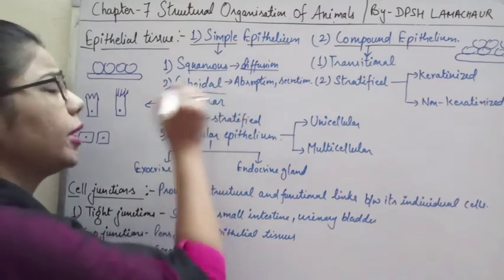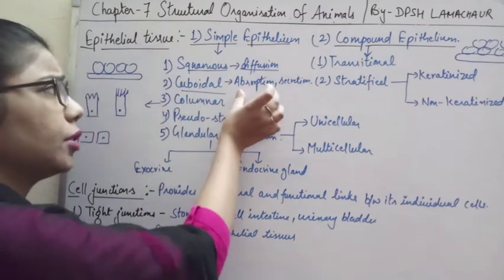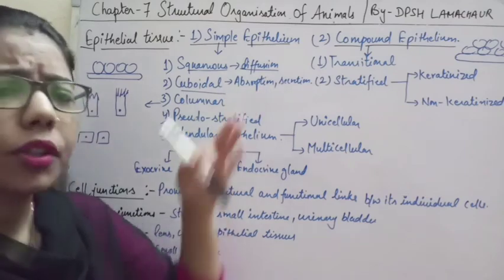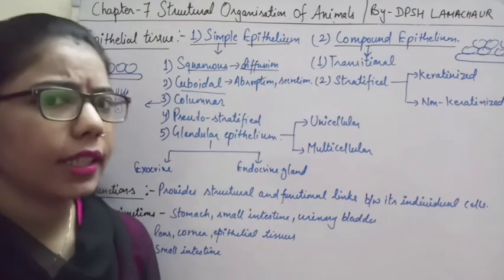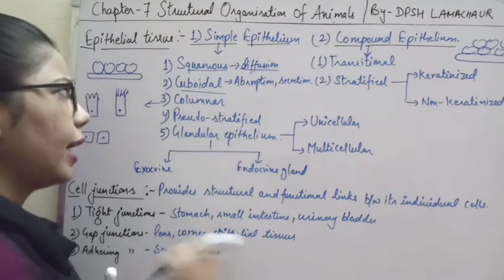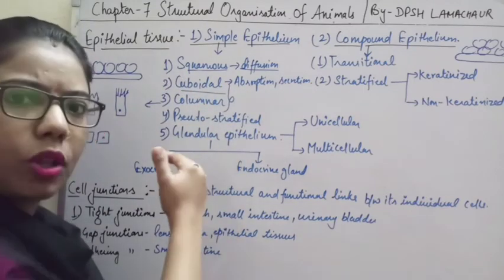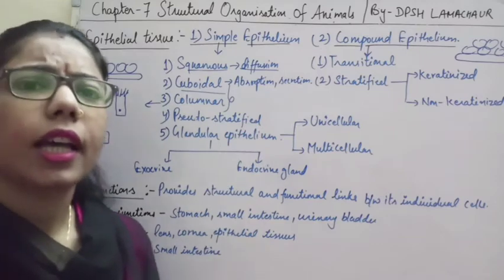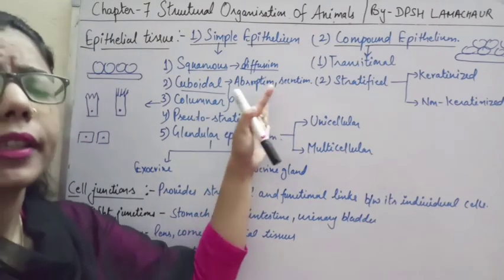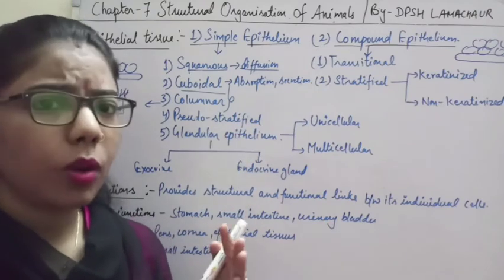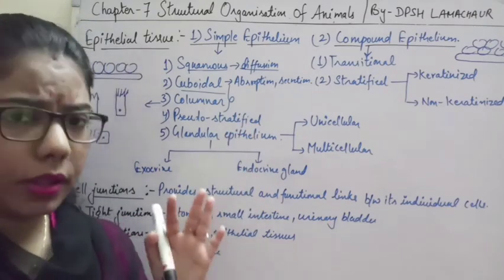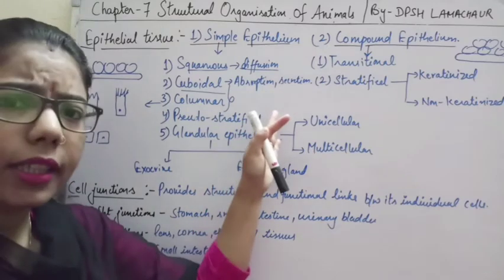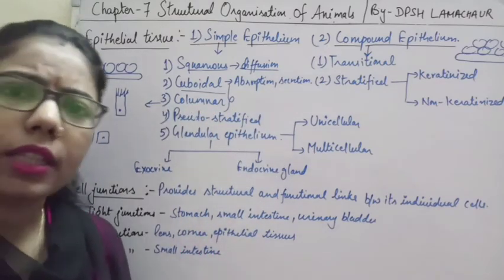Cuboidal epithelial tissue has cube-like cells. The function of both cuboidal and columnar epithelium is absorption and secretion. These tissues are found where absorption is required, such as in the small intestine and in the tubular system where reabsorption of nutrients takes place.